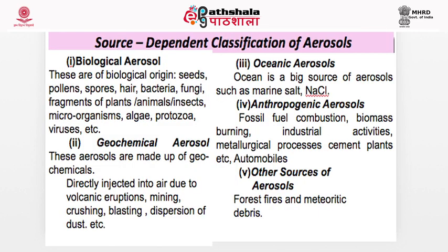Source-dependent classification of aerosols considers where the aerosol originated. Biological aerosols include seeds, pollens, spores, hair, bacteria, fungi, fragments of plants, animals, insects, microorganisms, algae, protozoa, and viruses — all suspended in air. Geochemical aerosols come directly from the earth; for example, during mining, ore particles or dust go into the atmosphere. Volcanic eruptions release large amounts of material including sulfur dioxide, dust particles, and chemicals.